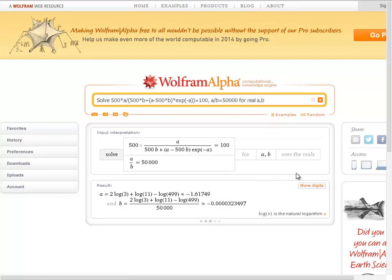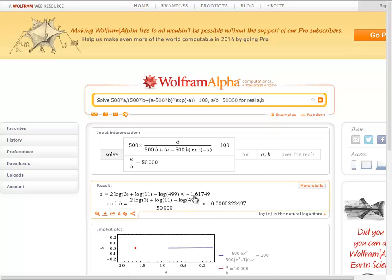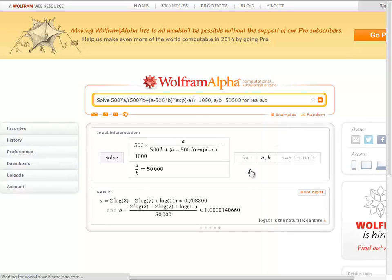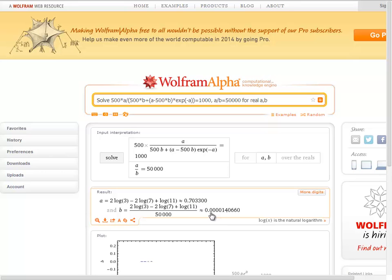So if you have to pause that, feel free to do so. It's giving me the two values, which is negative one point. Something's crazy here. I got it wrong. Let me fix this. Oh, that's a thousand. Alright, so double check that you get the same thing I've got here. 500 a over 500 b times a minus 500 b exp of negative a equals 1000. Let's solve that for real a and b. And I get a is .7033 and b is .000040660.